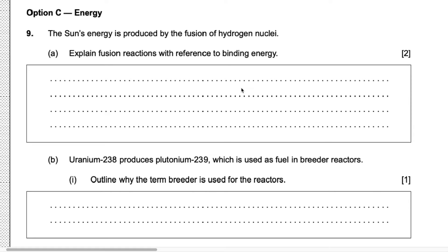The sun's energy is produced by the fusion of hydrogen nuclei. The question asks us to explain fusion reactions with reference to binding energy. So the first mark — you need to answer what fusion is. Fusion is the process of two lighter nuclei combining with each other to form a heavier nucleus.